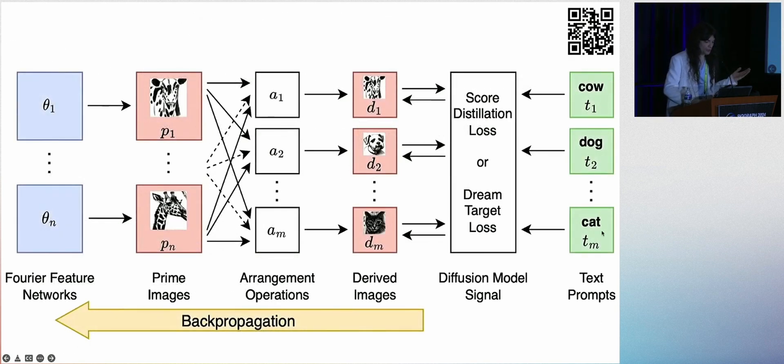So if we have a set of text prompts like cow, dog, or cat, we use score distillation loss, or our dream target loss, to optimize the primes so that these derived images, after arranging them, turn into their respective prompts.